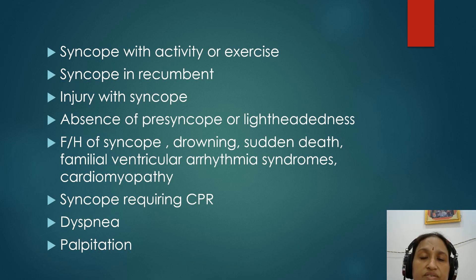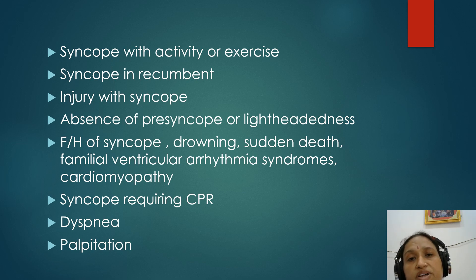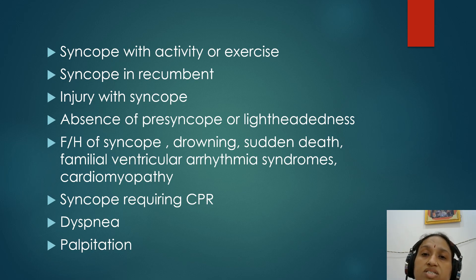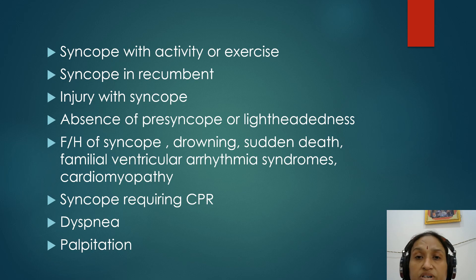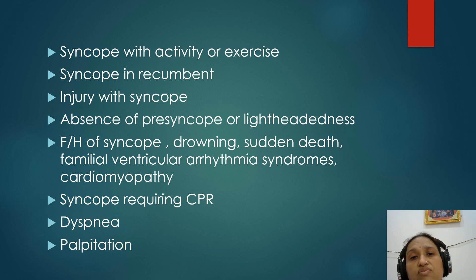On family history, if you find a person suffering from syncope in the family, or if there is history of drowning — because if arrhythmia occurs during drowning the accident happens — or if there is history of sudden death, cardiomyopathy, or familial ventricular arrhythmias in the family, then certainly the patient needs evaluation for the same conditions.